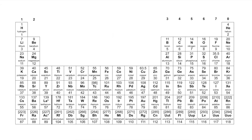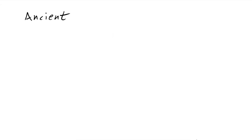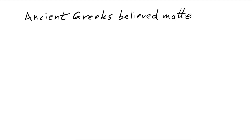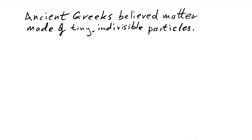Imagine being the people who were trying to figure out what stuff was made of. Now you might think that the idea of atoms is a new idea, but actually the ancient Greeks believed that matter, stuff, was made up of indivisible parts. And they were right. We now know them to be atoms.